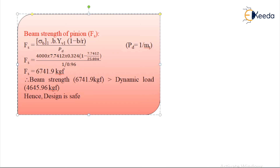Beam strength of the pinion Fs = σB1 × B × YV1 × (1 − B/R) / Pd, where Pd = 1/MT. Substituting all values gives Fs = 6741.9 kgf. Since Fd < Fs, the beam strength is greater than the dynamic load, so the design is safe.